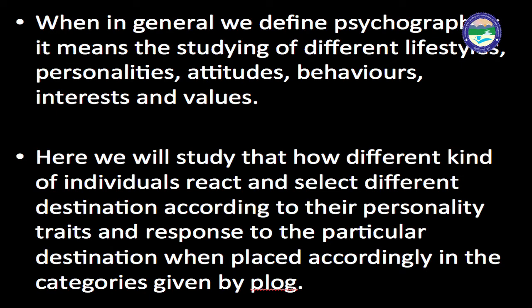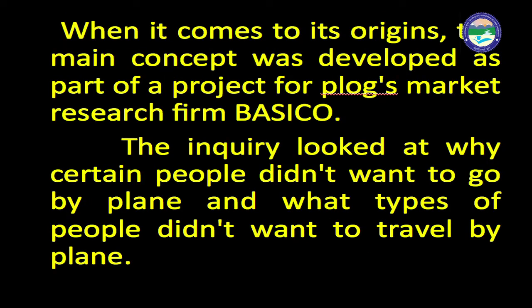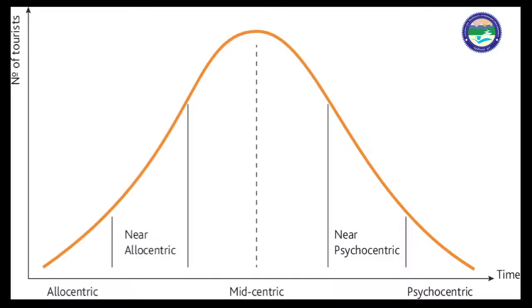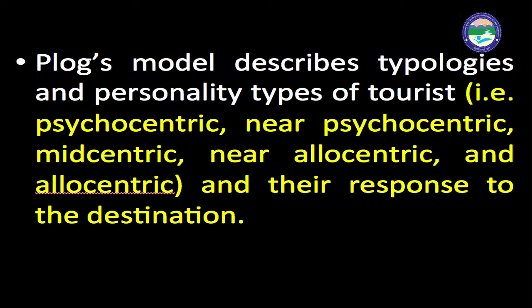The main concept was developed as part of a project for Plog's market research firm, Basco. The inquiry looked at why certain people didn't want to travel by plane and what types of people avoided air travel. The model has a bell-shaped curve covering three sectors: allocentric, mid-centric, and psychocentric, with near-allocentric and near-psychocentric in between.